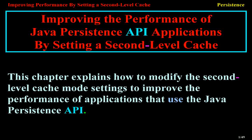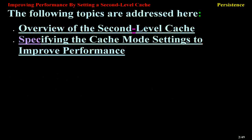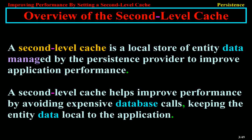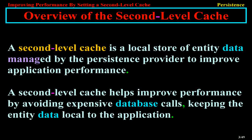Improving the Performance of Java Persistence API Applications by Setting a Second-Level Cache. This chapter explains how to modify the second-level cache mode settings to improve the performance of applications that use the Java Persistence API. Overview of the Second-Level Cache. A second-level cache is a local store of entity data managed by the Persistence Provider to improve application performance.